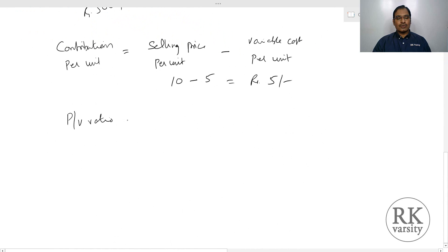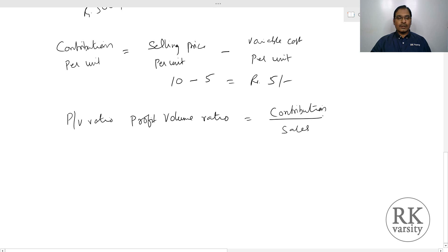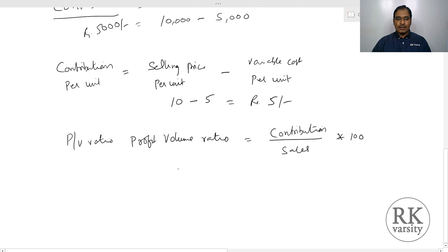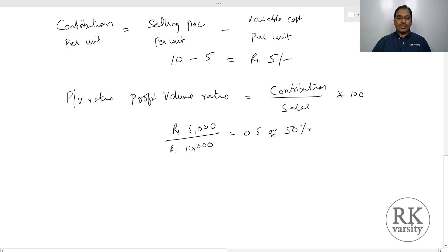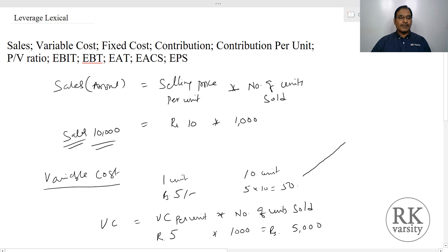Then comes the PV ratio, also called profit volume ratio. PV ratio measures the relationship between contribution and sales — that is, contribution divided by sales. If you want PV ratio as a percentage, multiply by 100. In our example, contribution is Rs.5,000 and sales are Rs.10,000, so PV ratio is 0.5 or 50%. In terms of per unit, contribution per unit Rs.5 divided by selling price per unit Rs.10 also gives 50%.